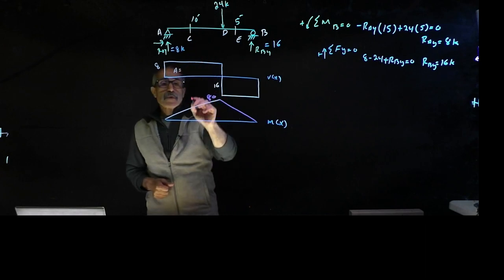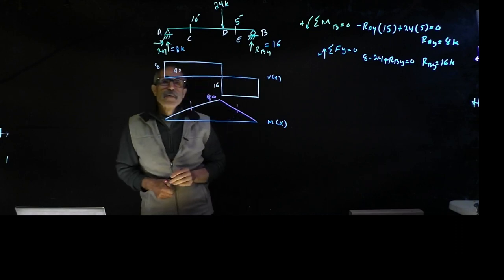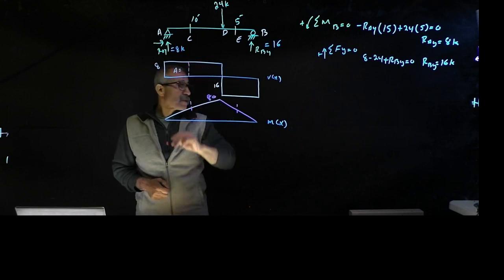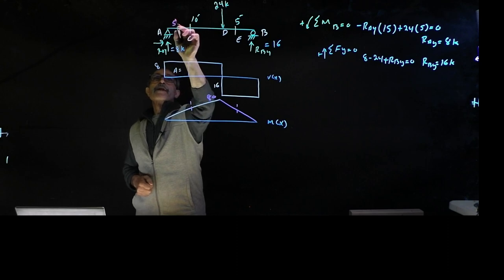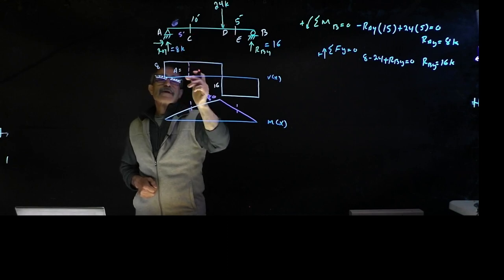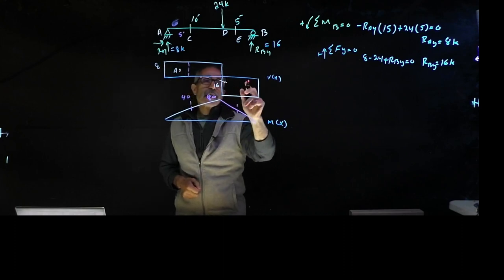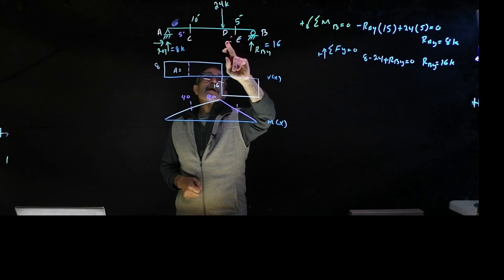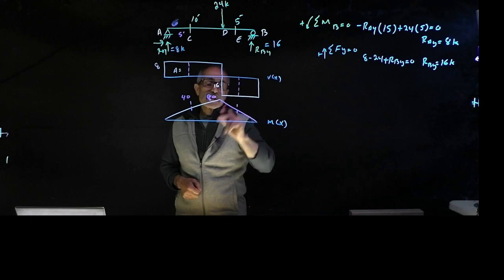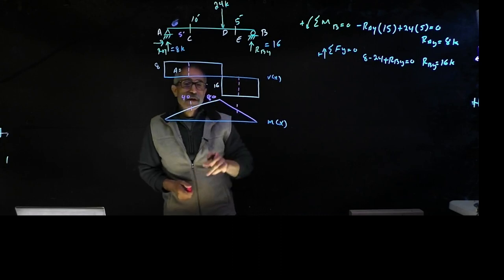The moment at the 24 kip load point is 80. Then 16 times 5 equals 80, bringing it back to zero. The question asked for moment at points C and E. Point C is at 5 feet: area equals 8 times 5 equals 40. Point E is at 2.5 feet past the 80 kip-foot peak: 2.5 times 16 equals 40.